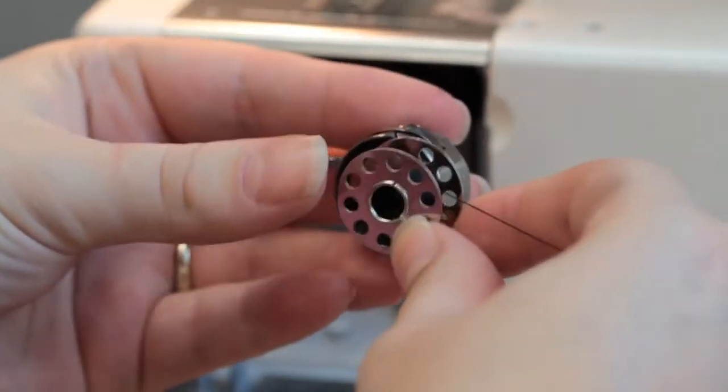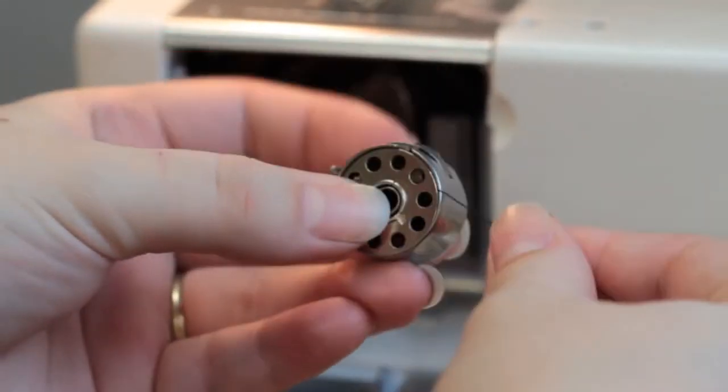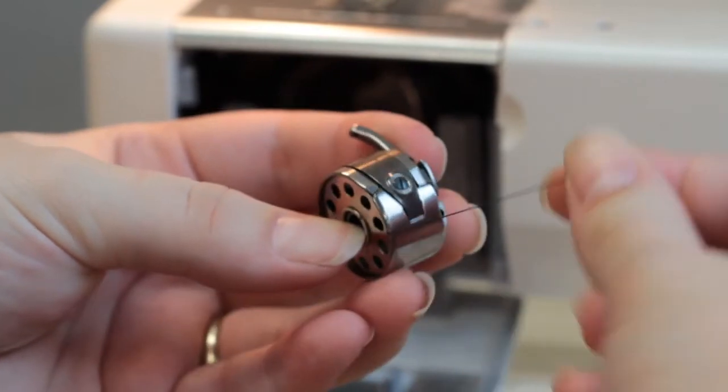Place the bobbin in the case with the writing on the bobbin face up, or with the thread pulled off to the right hand side, going clockwise.